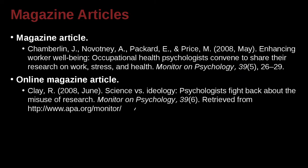Here's an online magazine that you don't get in print. We have the author's name and first name initial. We have the year and the month, because it's a monthly magazine. Here is the name of the article: 'Science vs. Ideology: Psychologists Fight Back About the Misuse of Research.' After the colon there's a capital letter. Here is the magazine's name, and that's italicized. Comma, and then 39 is italicized. Six is not italicized. Period.